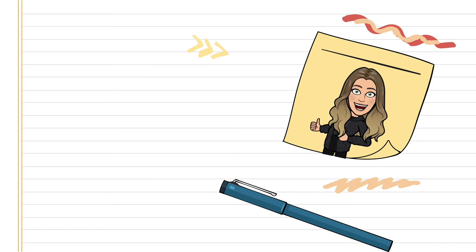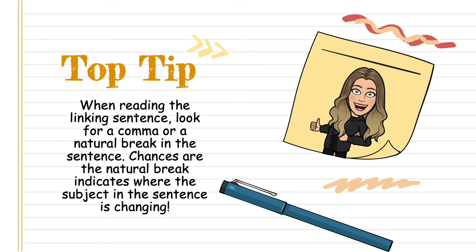Another top tip: when reading the linking sentence, it's important to look for a comma, a colon, or a natural break in the sentence such as a conjunction. Chances are the natural break indicates where the subject in the sentence is changing, just like we saw in practice one with the colon.